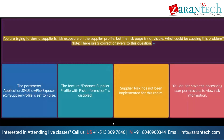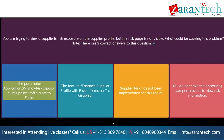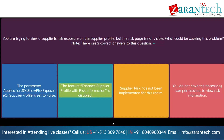Question: You are trying to view a supplier's risk exposure on the supplier profile, but the risk page is not visible. What could be causing this problem? Note: there are two correct answers. Option 1: The parameter application.sm.show_risk_exposure_on_supplier_profile is set to false. Option 2: The feature 'enhance supplier profile with risk information' is disabled. Option 3: Supplier risk has not been implemented for this realm. Option 4: You do not have the necessary user permissions to view risk information.